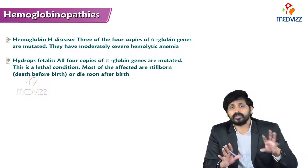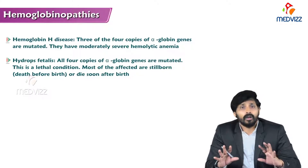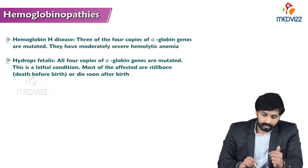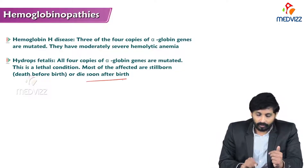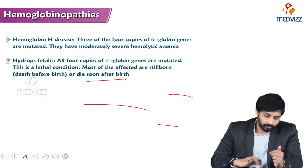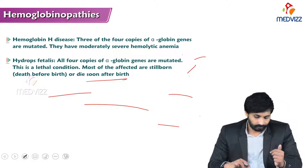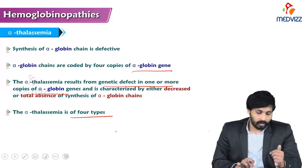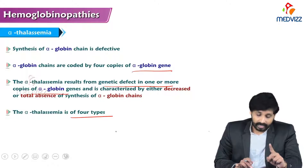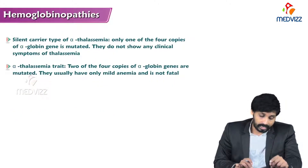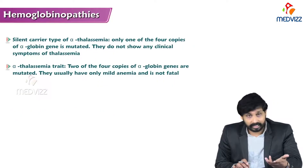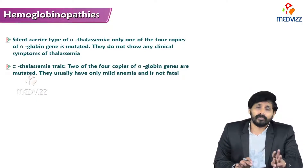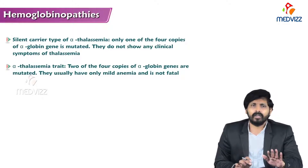Hydrops fetalis occurs when all four copies of alpha globin genes are mutated. This is a lethal condition; most affected individuals are stillborn or die soon after birth. Out of the four types of alpha thalassemia, hydrops fetalis is the most dangerous. The earlier three forms are mild or symptomatic, but the fourth is fatal.